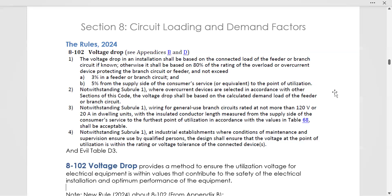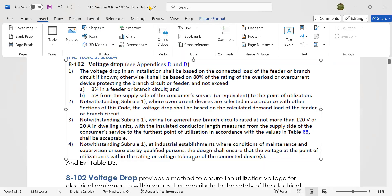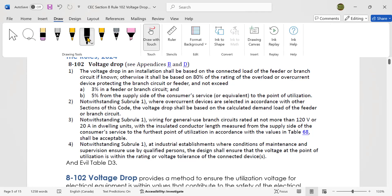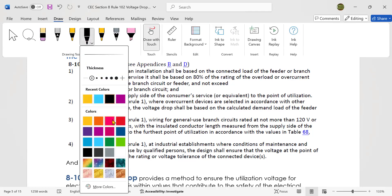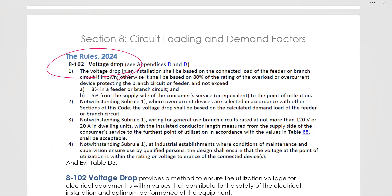Well, I'm going to take a moment to review the rule that is 8102 voltage drop. So let's look at what it says in the 2024 edition of the Canadian Electrical Code before we go ahead and do some example problems on a different video, because everybody's waiting for example problems. So voltage drop rule 8102, I do have another video that talks about why voltage drop is significant. This is a really important section, it provides a method to ensure the utilization of voltage for electrical equipment is within the values that contribute to the safety of the electrical installation and optimum performance of the equipment.